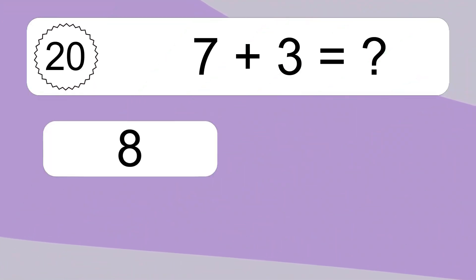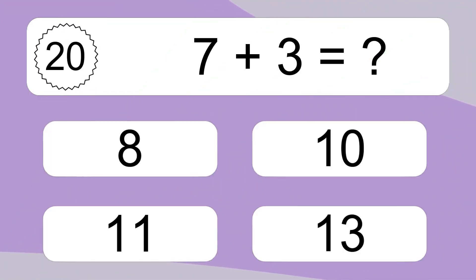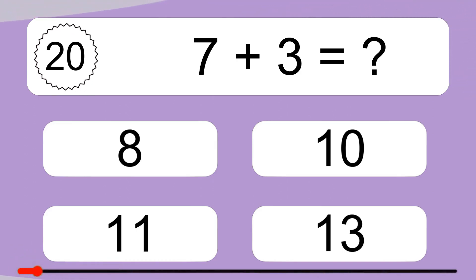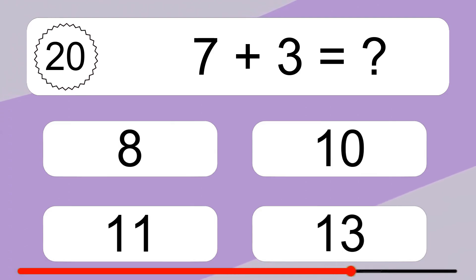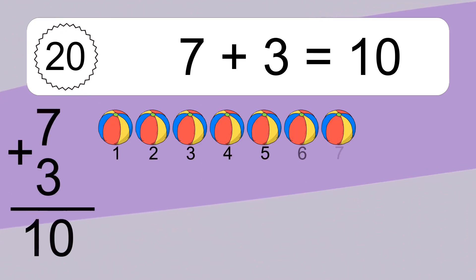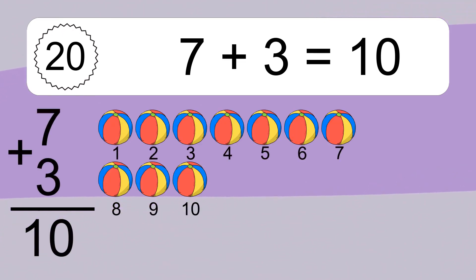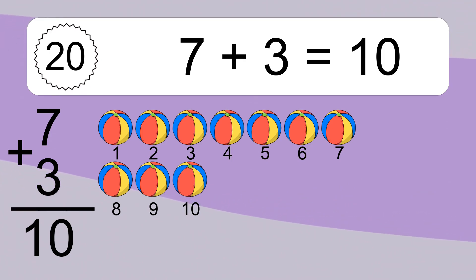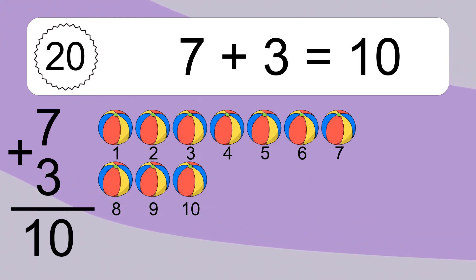7 plus 3 equals what? 7 plus 3 equals 10. Let's count it. 1, 2, 3, 4, 5, 6, 7, 8, 9, 10.